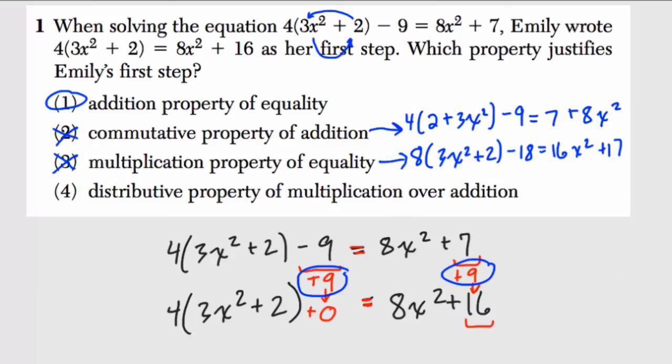The distributive property of multiplication over addition, what would that look like? Well, in this problem, it applies really to this term, the 4 times 3x squared plus 2. So let's just explore that really quick, and then we're done.